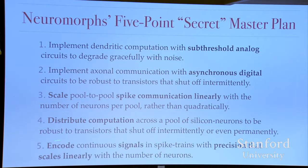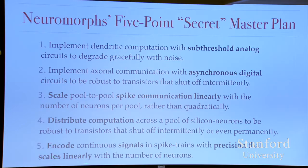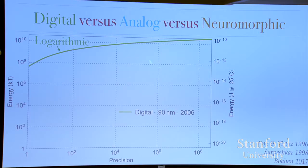We've already accomplished points one through four, and we think we now have a way to do point five. If you execute all five points, you dominate both analog and digital with the neuromorphic approach — this is the world domination part.